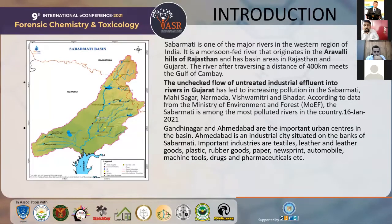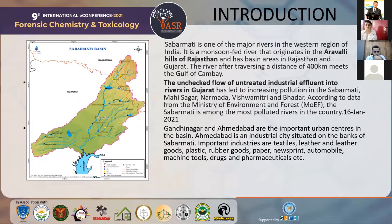The first part is the introduction. Sabarmati is one of the most important rivers in the western region of India. It is a monsoon-fed river that originates in the Aravalli hills of Rajasthan.